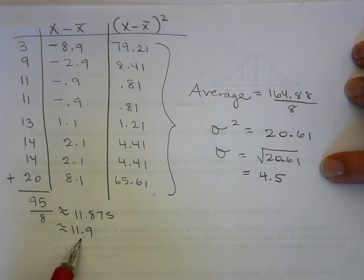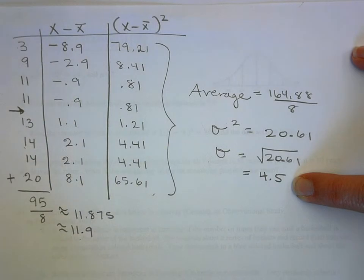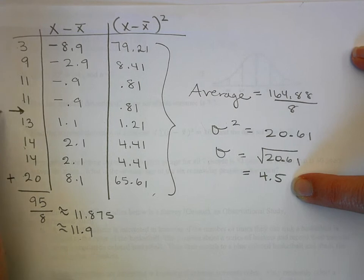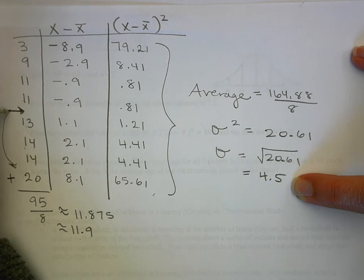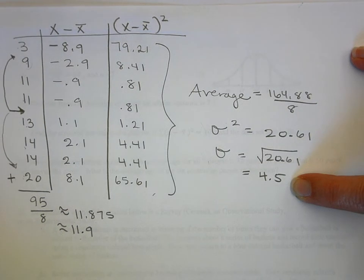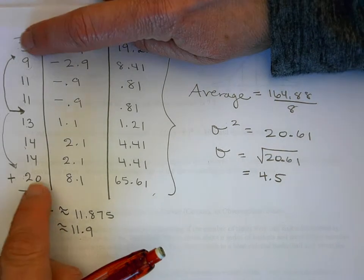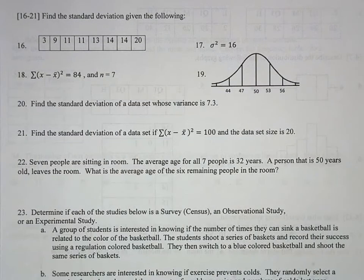The average is around 12, so 12 plus 4.5 is 16.5 and 12 minus 4.5 is about 7.5 — both of those land somewhere in the middle of the data, not at the ends, so the answer makes sense. That's how you can check to see if your variance makes sense. That was question 16.